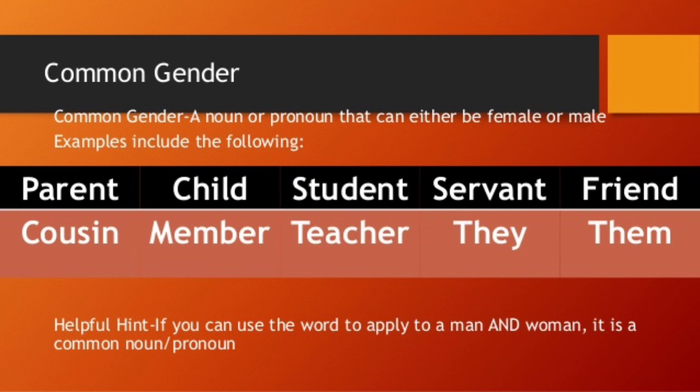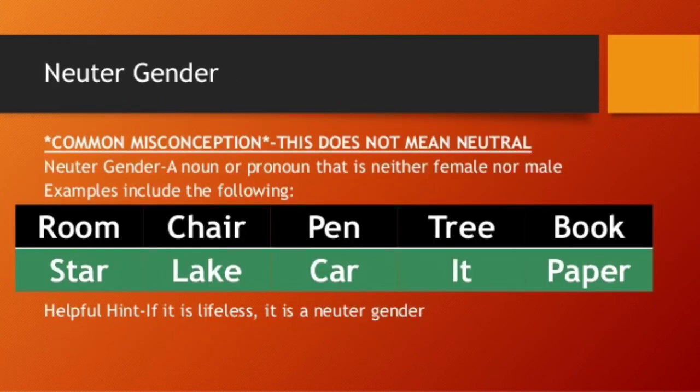The vocabulary will become clearer as you do the exercises provided after this video. Common gender means it could be both male and female — we differentiate by using words like 'child,' 'student,' or 'servant.' This is common gender and it is very easy to understand.